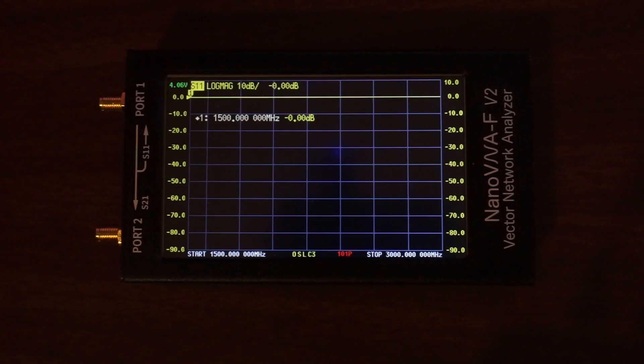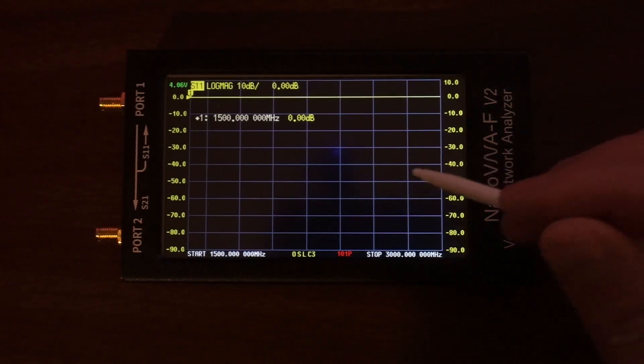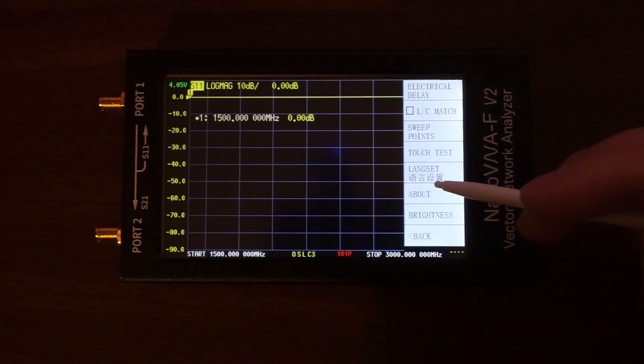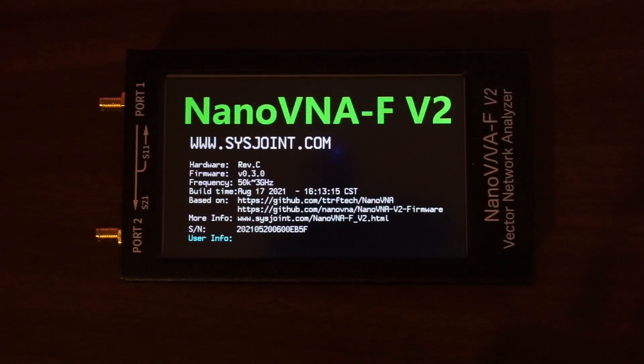The firmware on my NanoVNA-F V2 is not the latest. It is currently at 0.3.0. Let me double check - let's go to about. As you can see, it is indeed 0.30, and the latest according to SysJoin's website is 0.3.2.